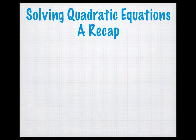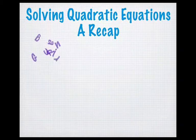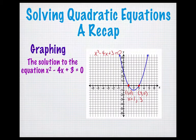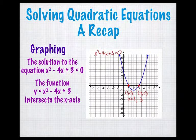We learned that we could solve quadratic equations in two ways. The first way was by graphing. If we have a graph of a quadratic equation, we discovered that the solution to the equation x squared minus 4x plus 3 equals 0 would be where the function y equals x squared minus 4x plus 3 intersects the x-axis. So if the function intersects the x-axis at 1, 0, and 3, 0, then the solution to the equation will be x equal to 1 and x equal to 3.